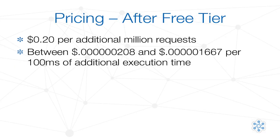Once we exceed the first million requests, we are charged 20 cents for each additional batch of 1 million requests. If we exceed our execution time, we are charged per 100 milliseconds of execution, with the amount determined by the memory allocation for our function. These are charged at fractions of fractions of pennies per 100 milliseconds — very compelling pricing for many workloads.